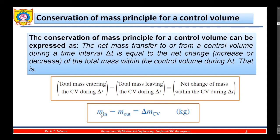That is expressed as m_in minus m_out equals delta m_cv, in kg, where m_in means mass coming inside the control volume, m_out means mass going out of the control volume, and delta m_cv implies the change of mass within the control volume.